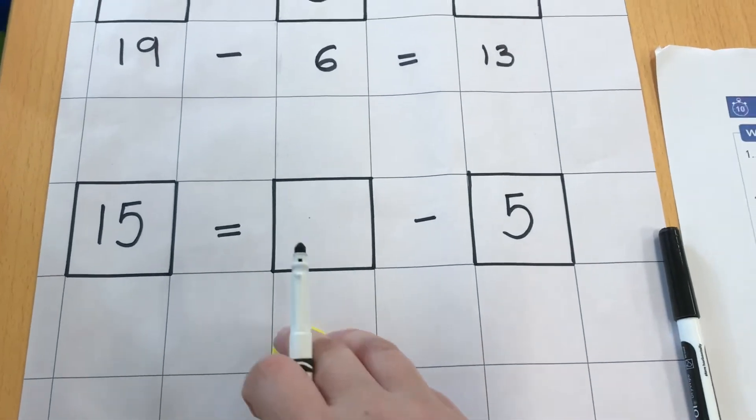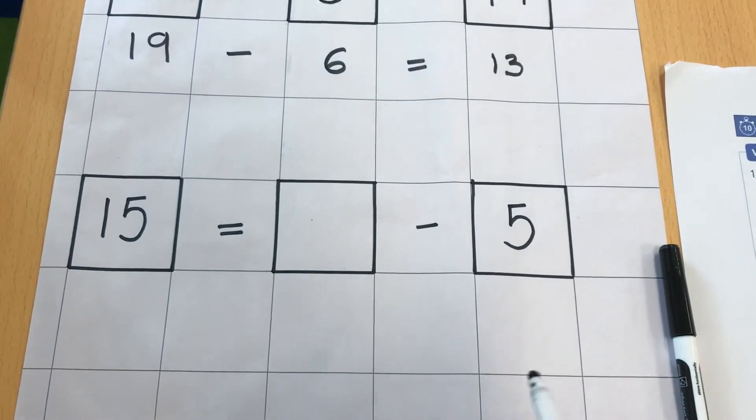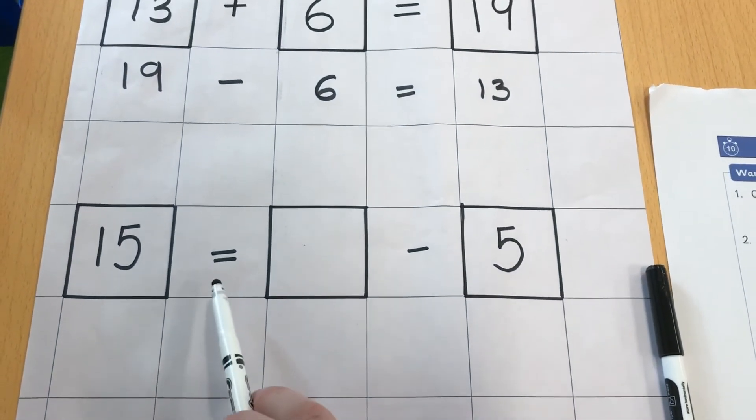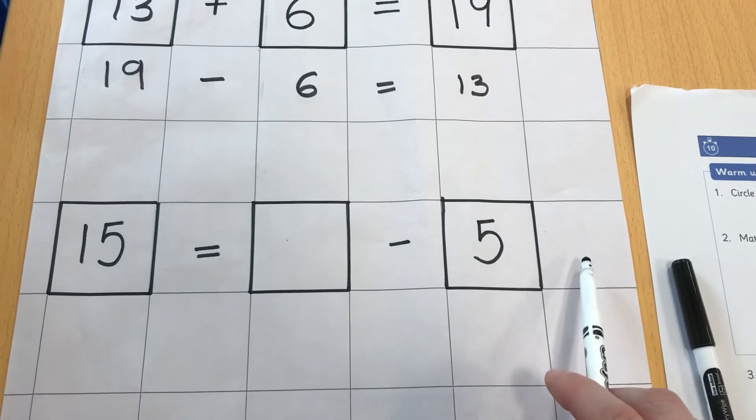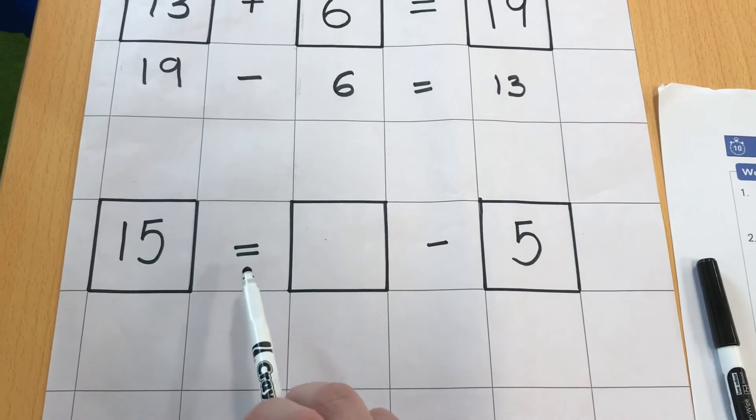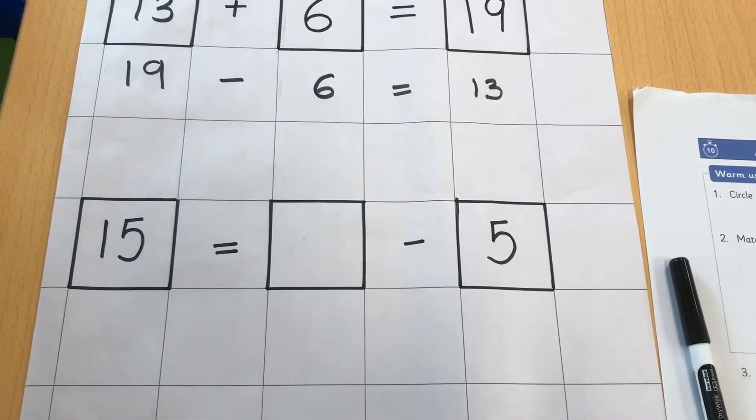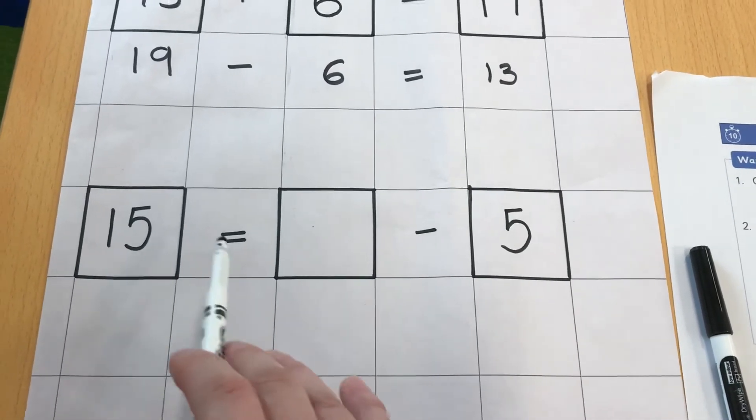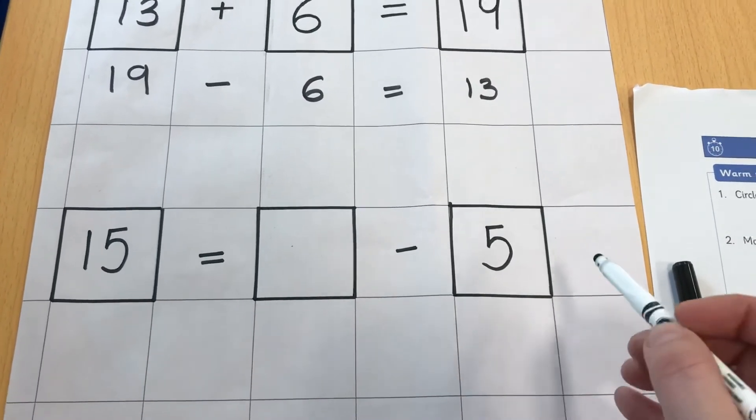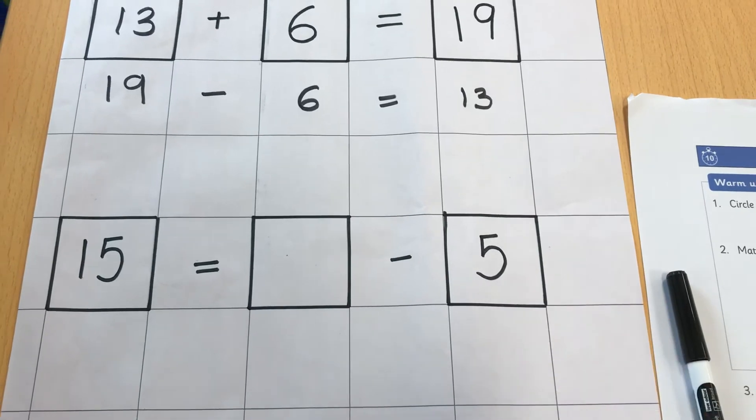Here's another one. And you'll notice on this next question that the same as has moved. It doesn't matter if the same as is at this end or it's at this end. We still do the same thing. And if you see a question like this and it confuses you having the answer at the beginning, you can always pretend it's at the end because the number sentence will be the same.